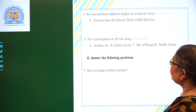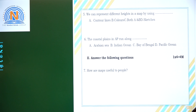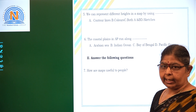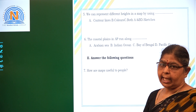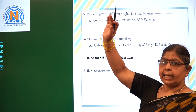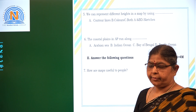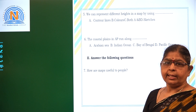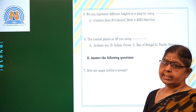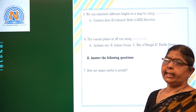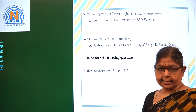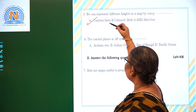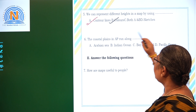We can represent different heights in a map by using different methods, because we can't actually draw the heights on a map. The first method is the contour line and the second is color. You can see an example in the textbook — the Nimpur village map is shown by different colors. So both contour lines and colors are used.